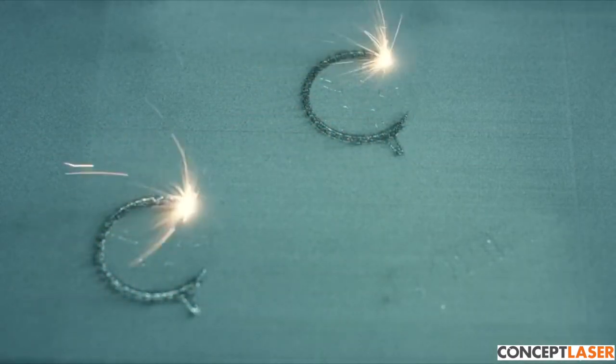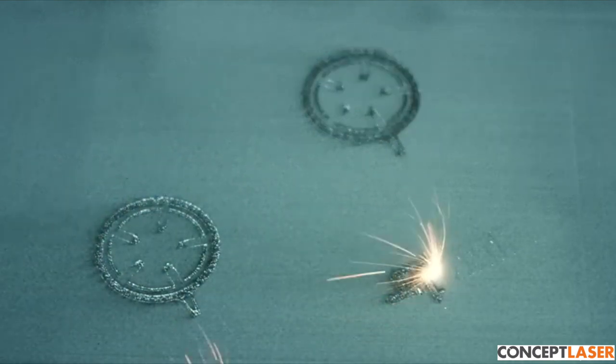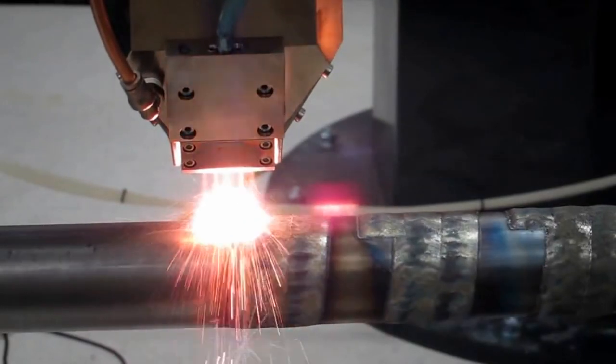Laser power and beam size can change over time due to reasons mostly related to the second law of thermodynamics. Optics and mirrors gradually absorb more laser light as they degrade, causing laser power to decrease over time.